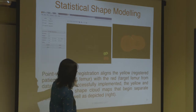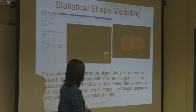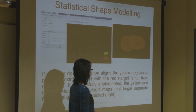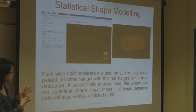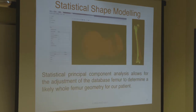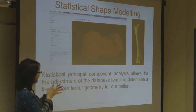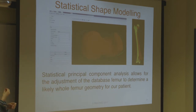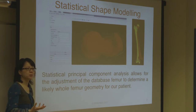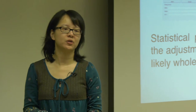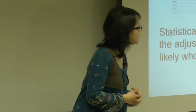We do some rigid registration to align the yellow patient-specific femur with the red target femur, which provides good alignment between the two. We then do PCA — principal component analysis — which allows us to adjust the database to give us an average representation of that proximal femur in the imaginary population. In a way, this is a virtual patient approach, where we have a database of virtual patients representative of that age range, and a new patient comes in with a partial femur.